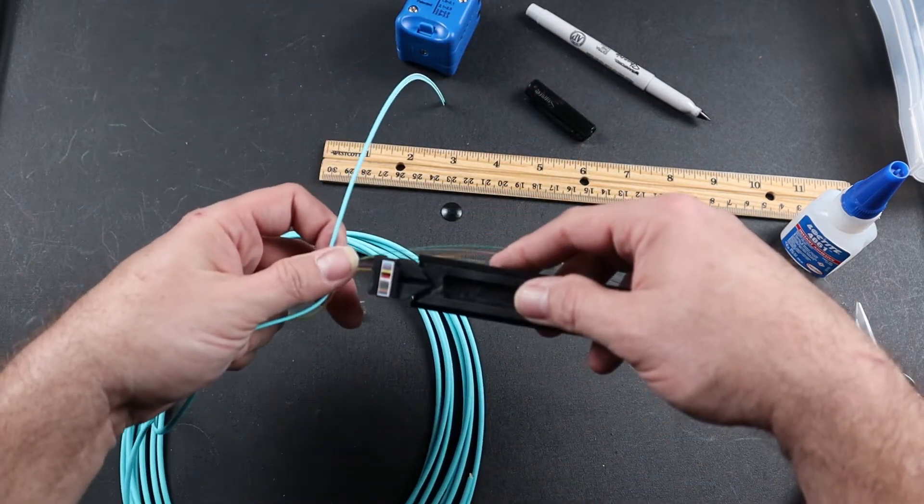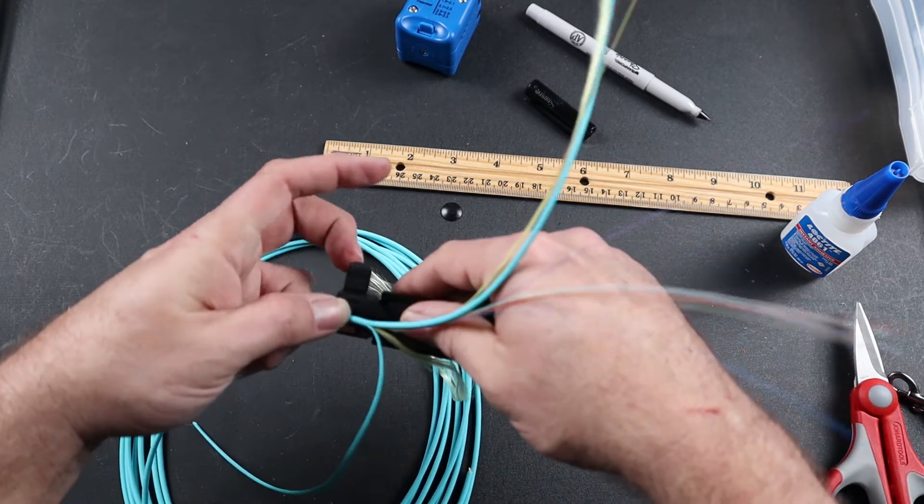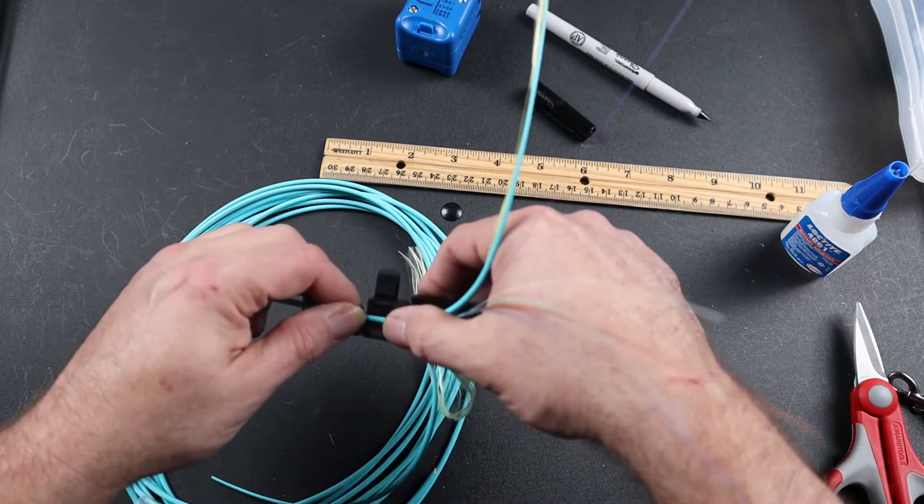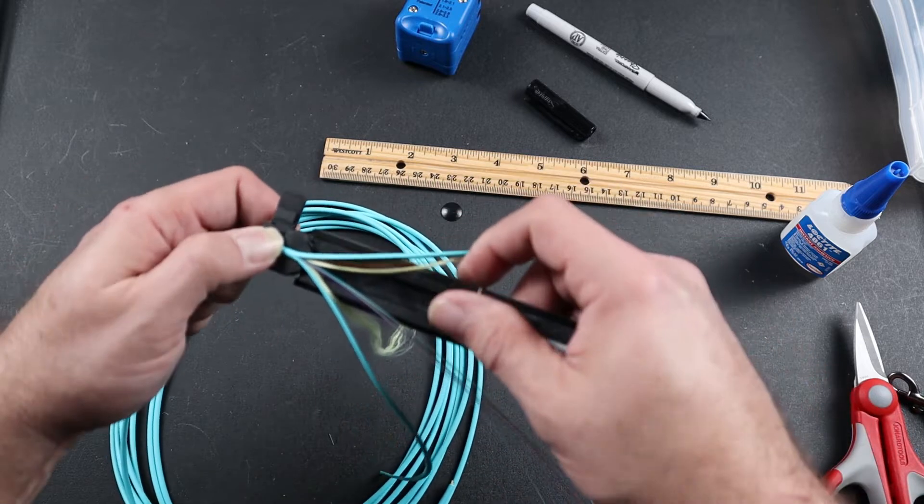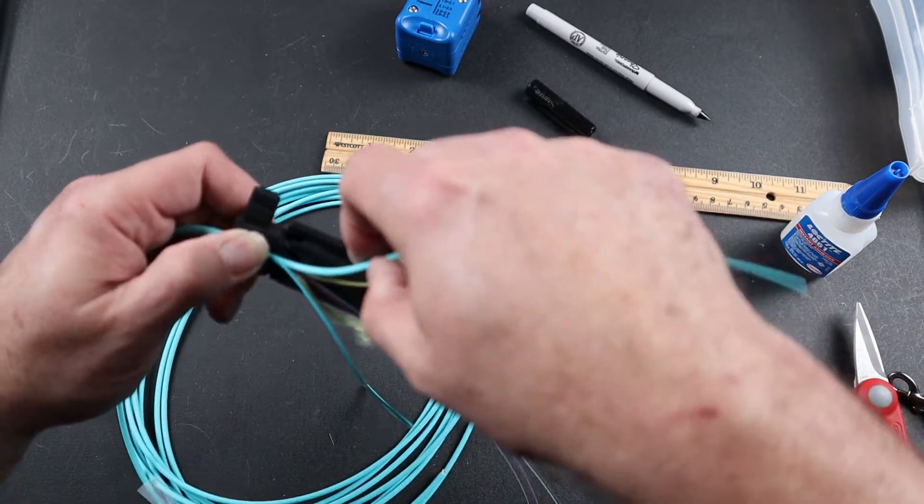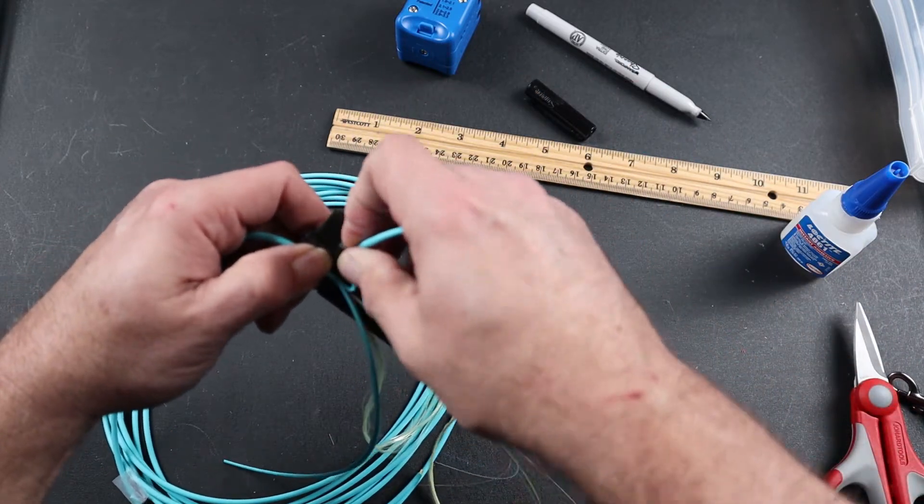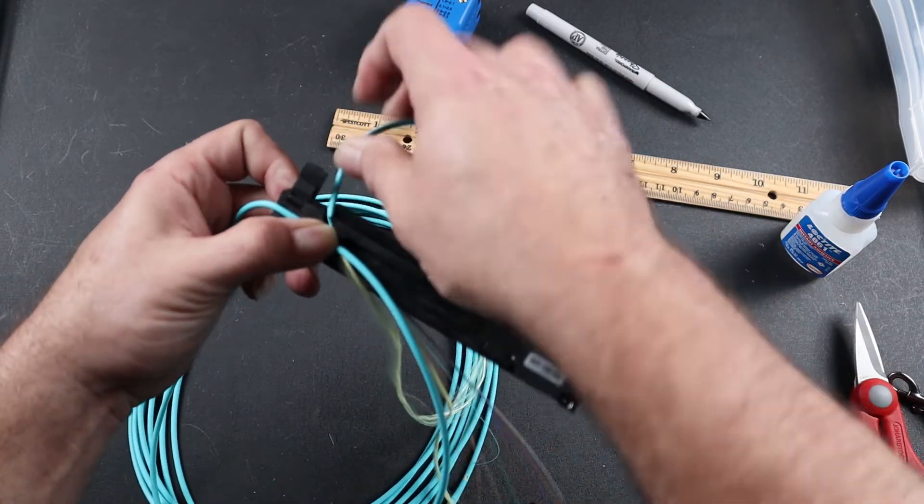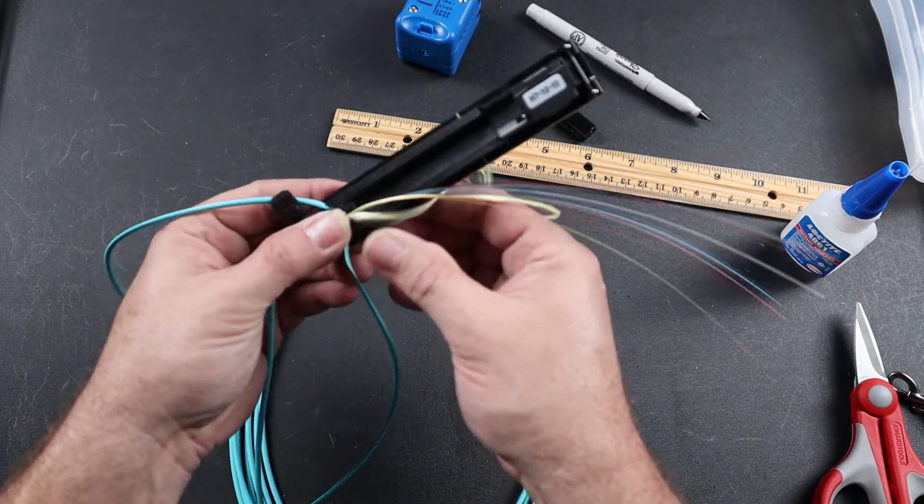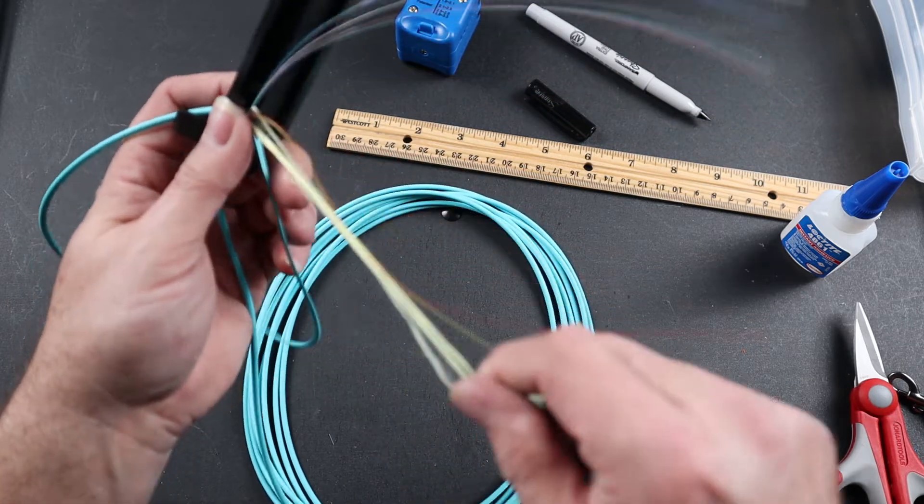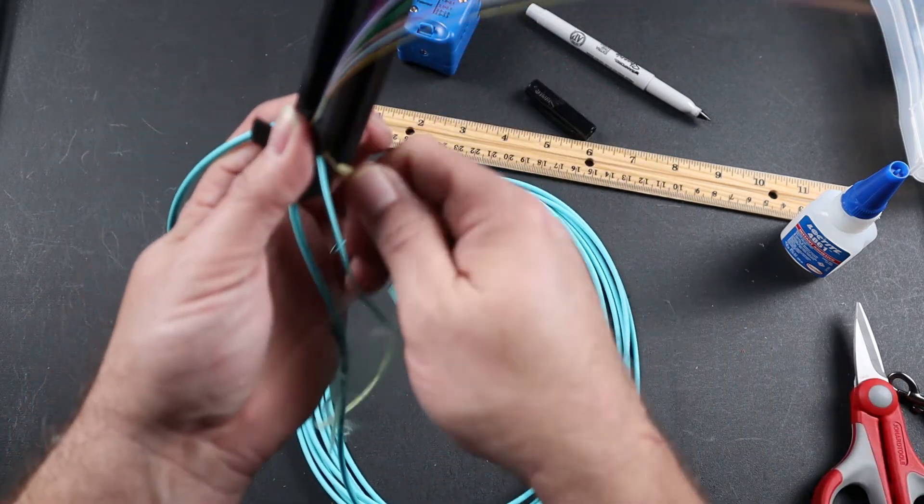Then, open the back of your mainframe. Place your fiber in and pull your jacket into the back slits. Also, pull your Kevlar back and out of the way.